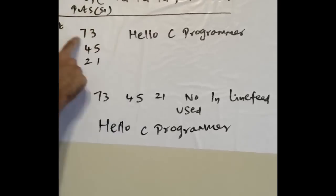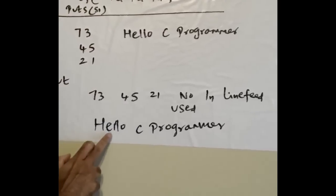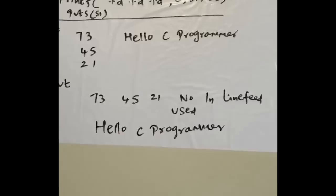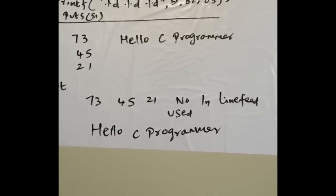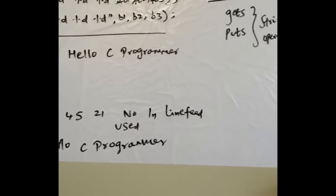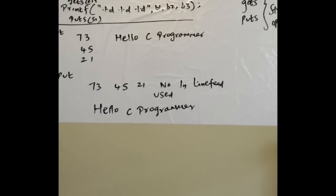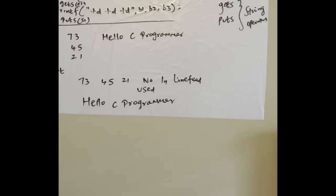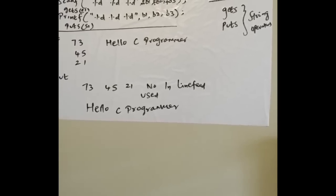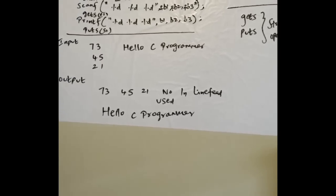If I put \n after each %d, each value will be displayed on separate lines - that's the difference. The string is displayed "Hello C Programmer". This is basic scanf and printf - like the heart of any program. We'll go into detail about other programming statements and loop controls in future lessons.